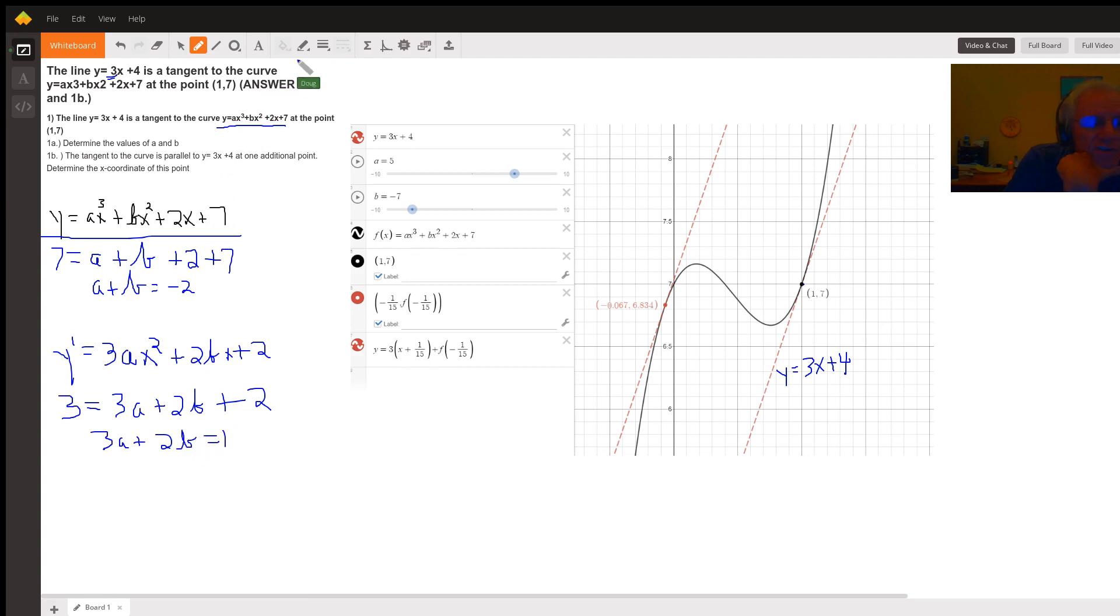So we want to solve this system of equations to find out the values of a and b. And we can use the addition and elimination method. Multiply the top equation by minus 3, for example, and add it with the second equation. And you'll find out that here's what I get: b is negative 7, and a is 5.